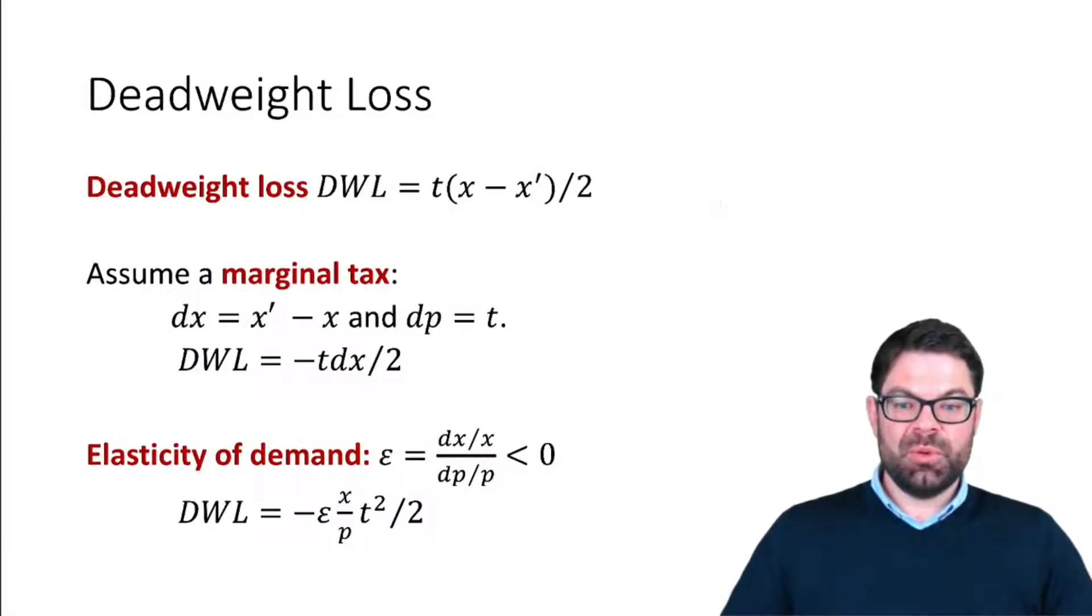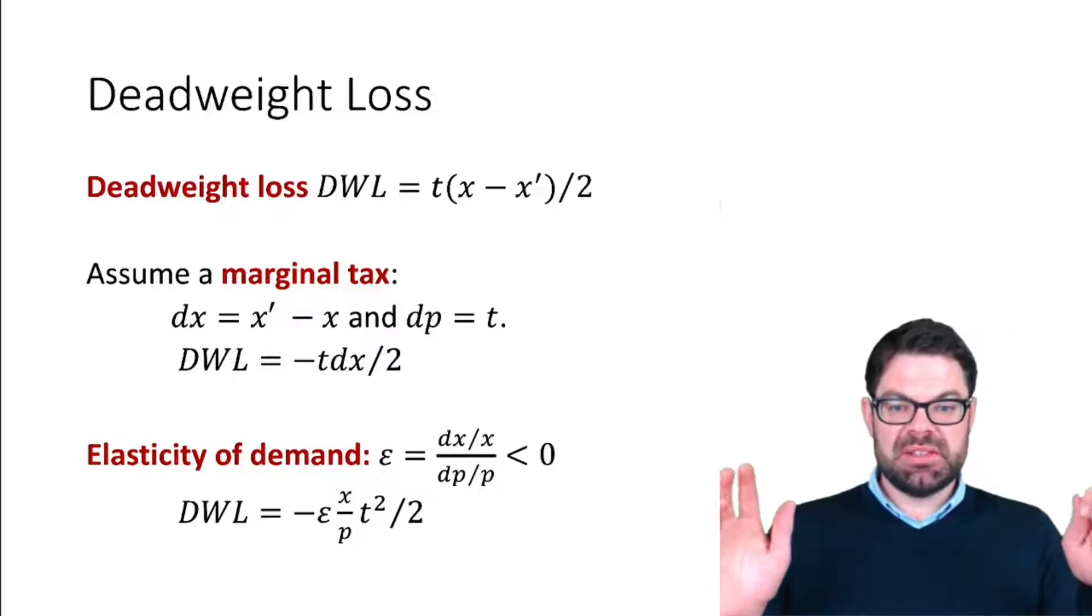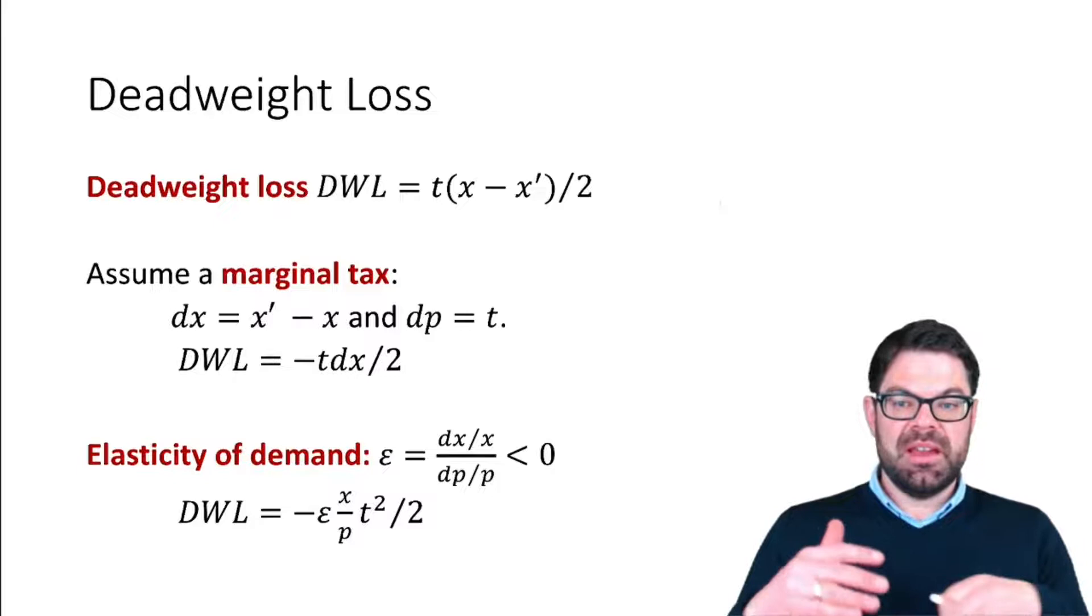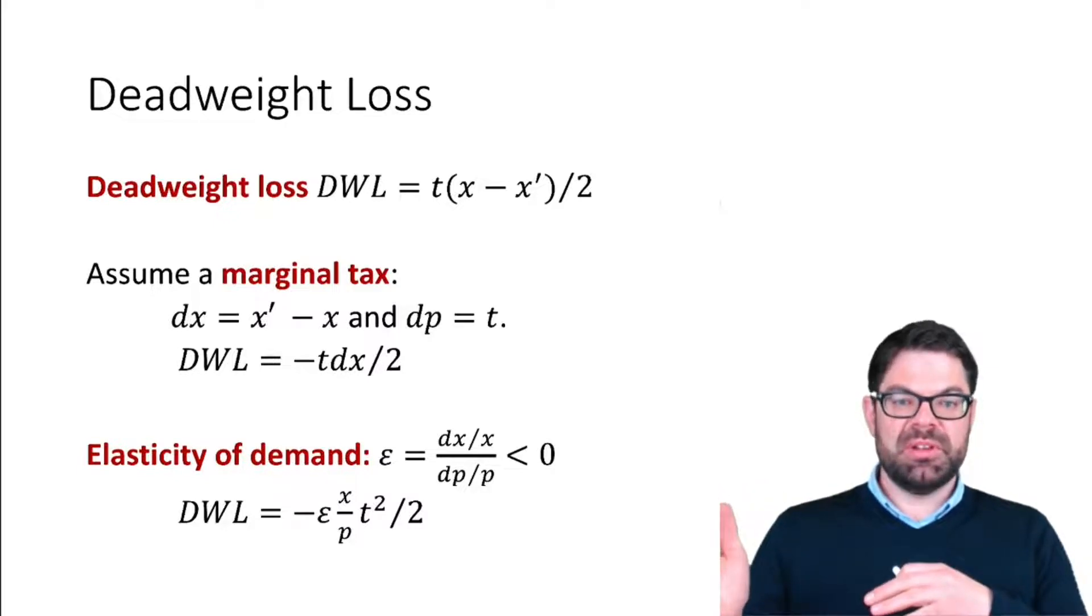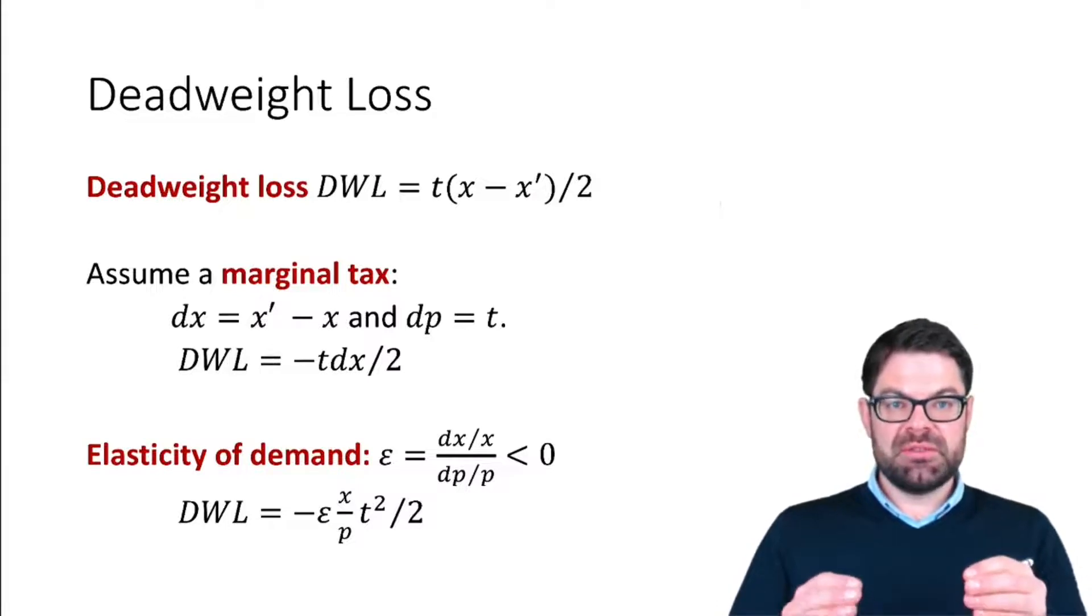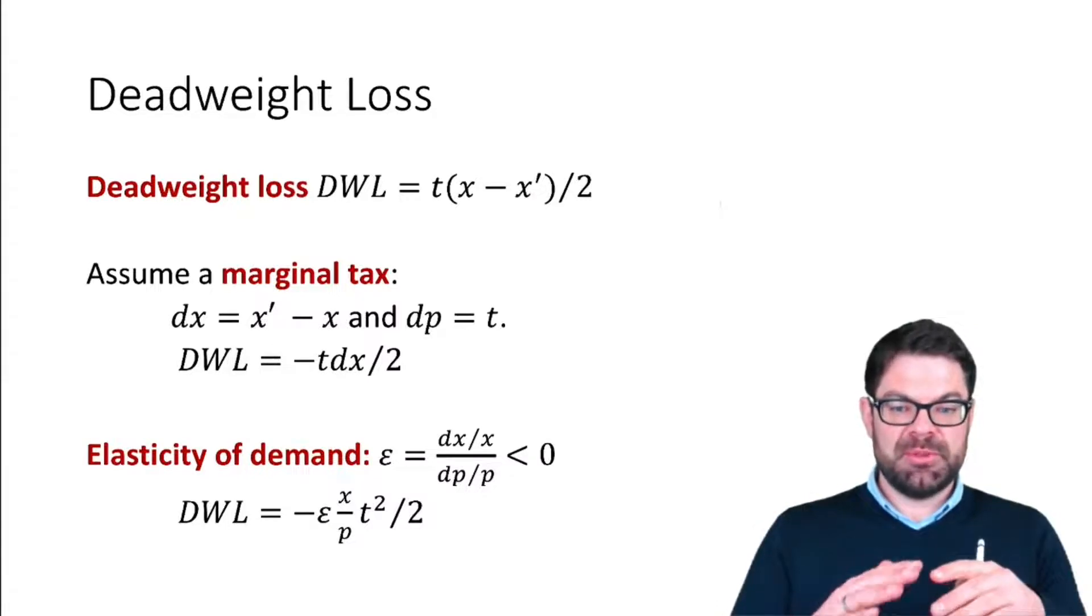In the previous video we derived this formula for the deadweight loss of a consumption tax or sales tax. In that model, the supply curve is completely horizontal, which means that the entire deadweight loss and the entire tax burden is borne by the consumers.